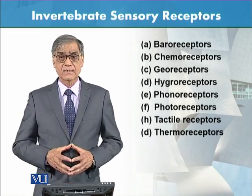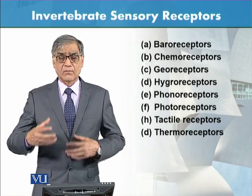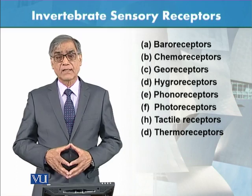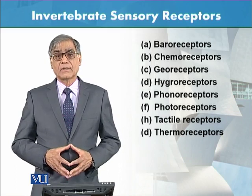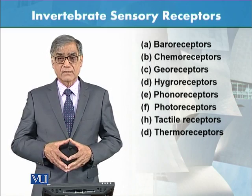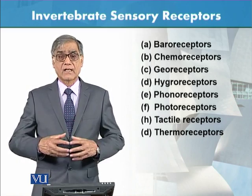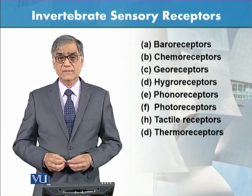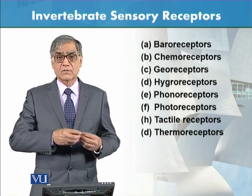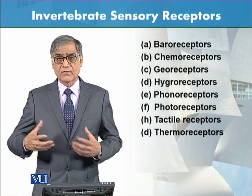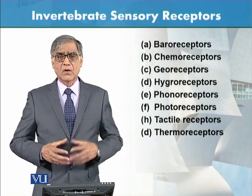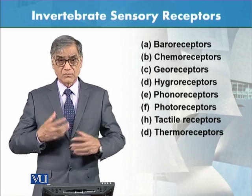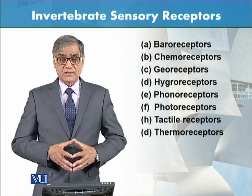Then there are hygroreceptors — that is, humidity. Humidity plays a very important role, particularly in insects. If there is high humidity یا بہت dryness ہے air کے اندر، تو یہی receptors ہیں which will receive the stimulus. Then that stimulus creates a wave of electrochemical change, action potential آئے گا، اور brain کی طرف پہنچے گا، اور brain سے پھر information واپس آئے گی، اور اسی طرح animal behave کرے گا۔